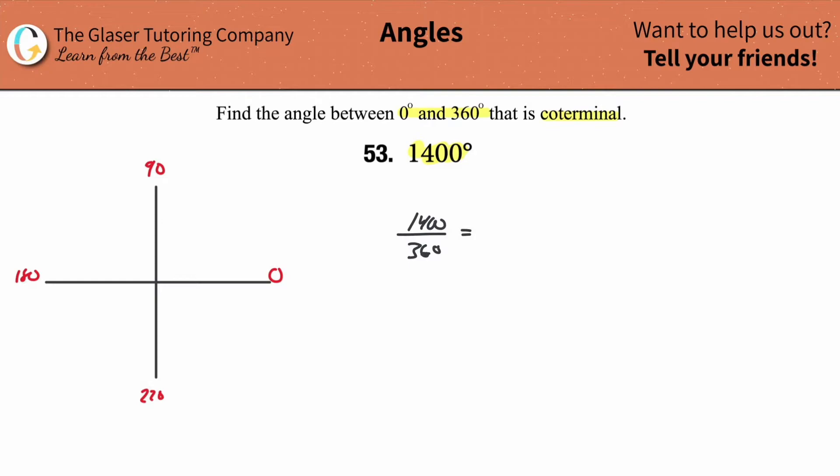And if we do that, let's do the math out, so it's going to be 1400 divided by 360. This will tell us that there's about 3.88 full rotations.